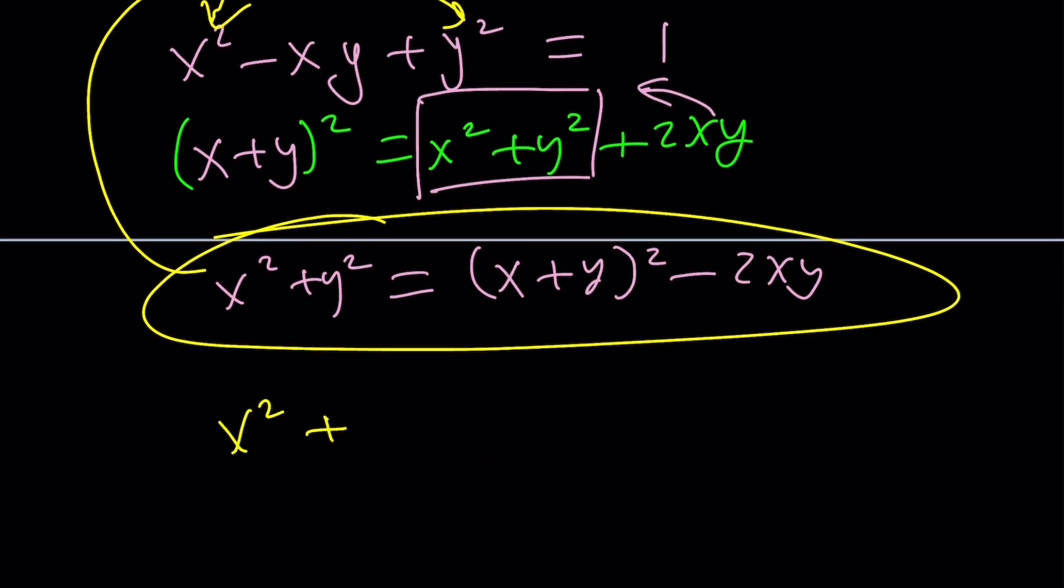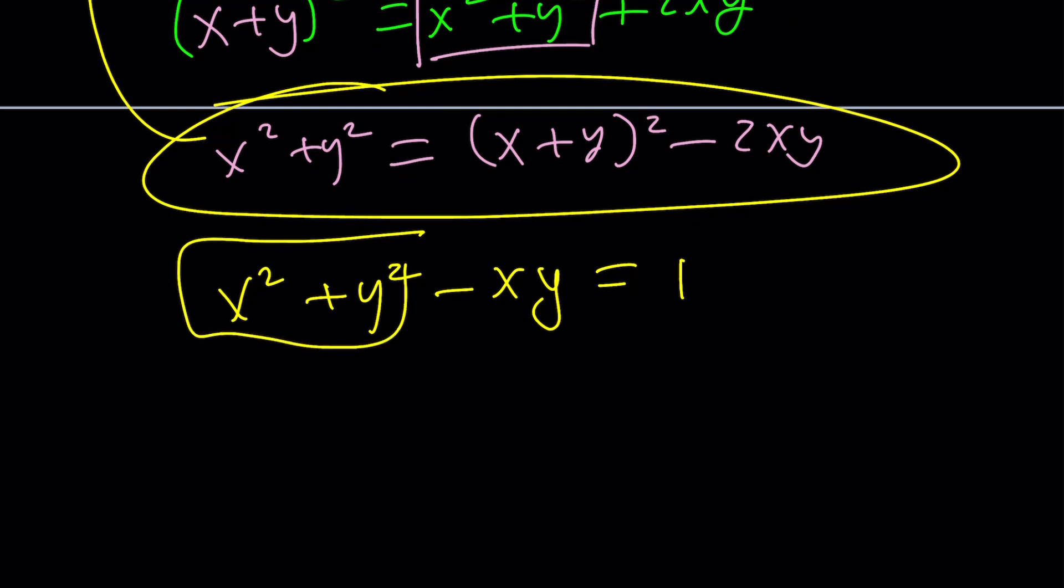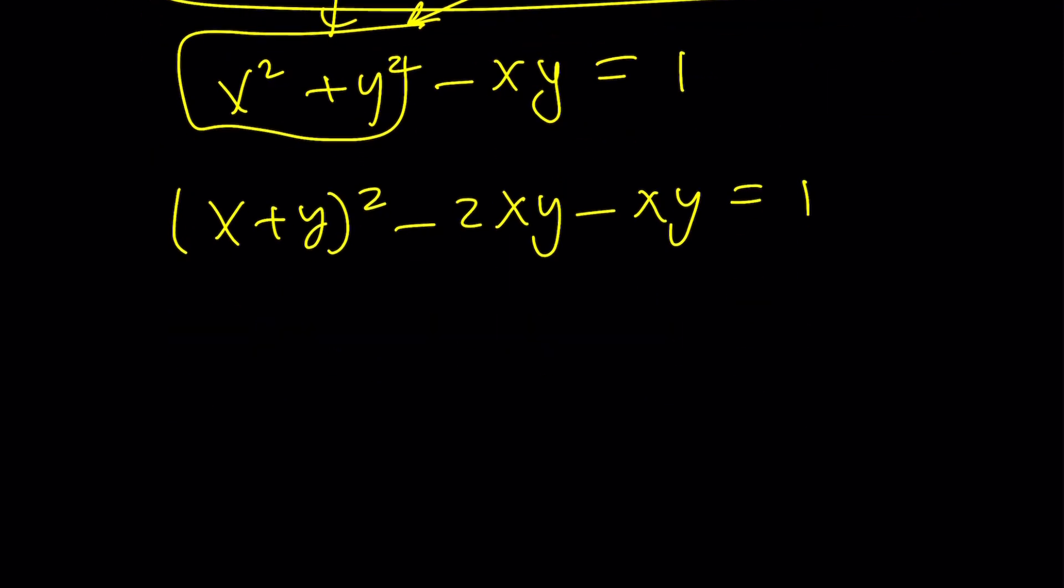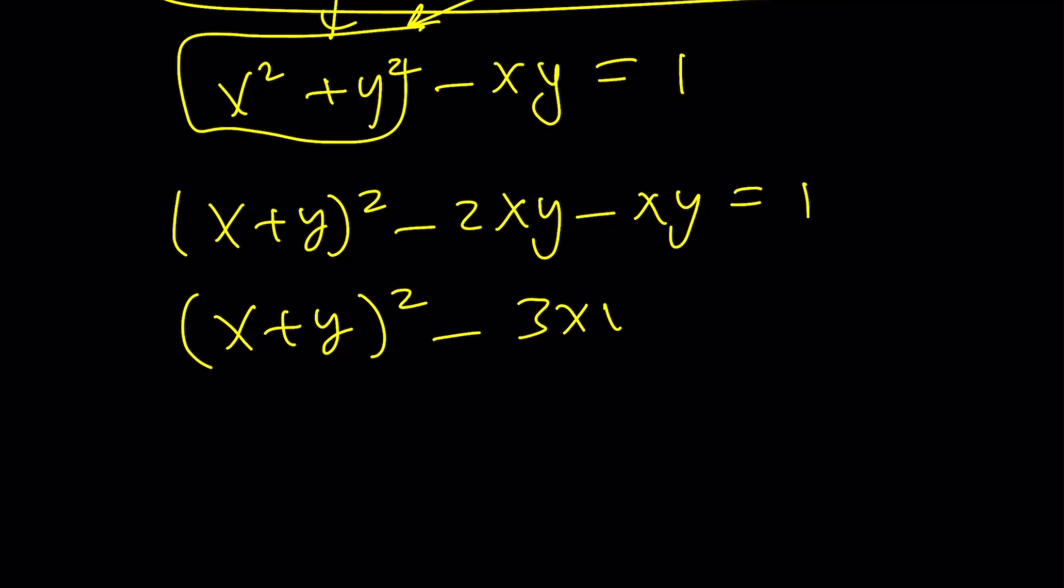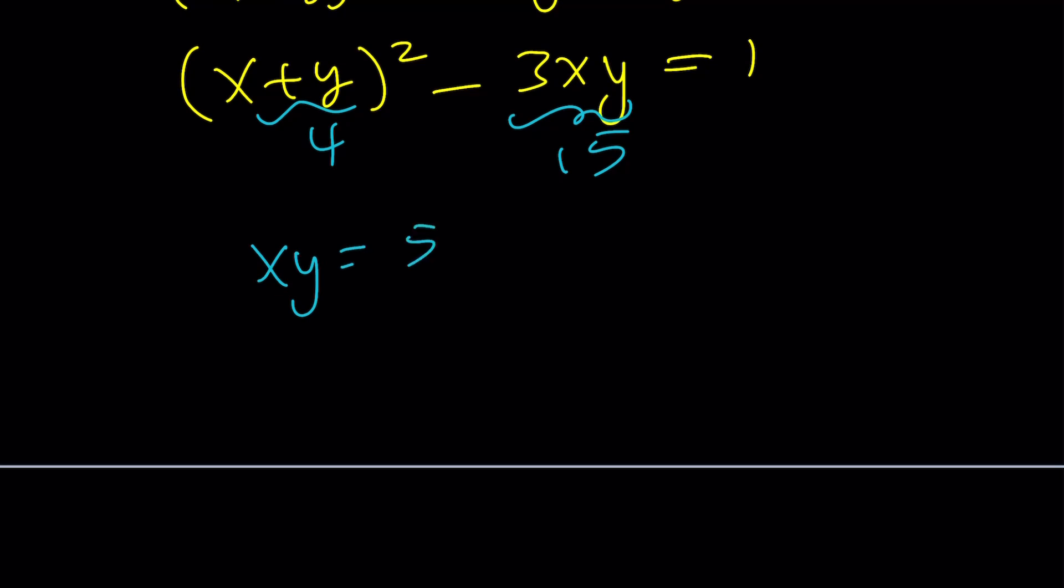x squared plus y squared minus xy equals 1. This is what we get from here. And then I'm going to replace x squared plus y squared with this. So it's going to become x plus y squared minus 2xy minus xy equals 1. And that gives me x plus y squared minus 3xy equals 1. But we know that x plus y equals 4. So now this is going to be a 4. That's going to be 16. So this needs to be 15. Therefore, xy needs to be 5. And we already know x plus y equals 4. By way of substitution, we can use Vieta's formulas. This is going to be t squared minus 4t plus 5 equals 0. And the solution set is going to be the same as before: 2 minus i and 2 plus i as the complex pair of solutions.